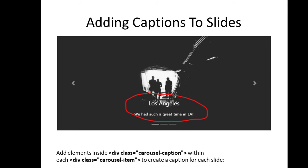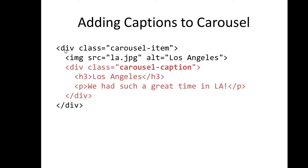We can also add captions to our slides. Add a div with class 'carousel-caption' as the last div inside the 'carousel-item' div to create a caption for each slide. So inside the carousel item we have the image, and below it we have the 'carousel-caption' div. Inside this division we place the caption — for example a heading (h3) and a paragraph to describe the image.